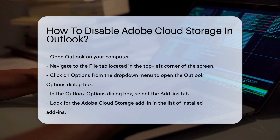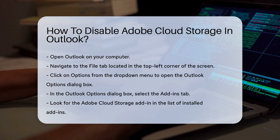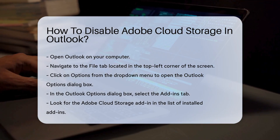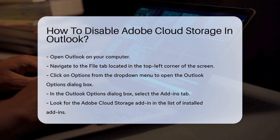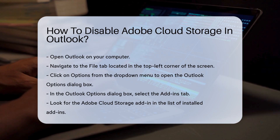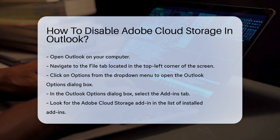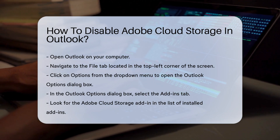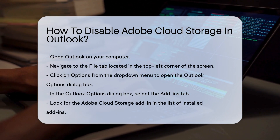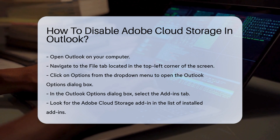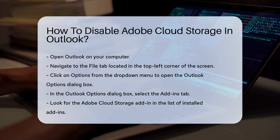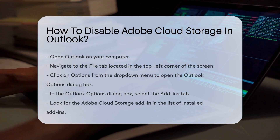First, open Outlook on your computer. Navigate to the File tab located in the top-left corner of the screen. Click on Options from the drop-down menu. This will open the Outlook Options dialog box.